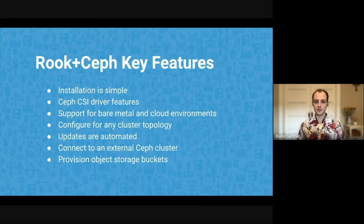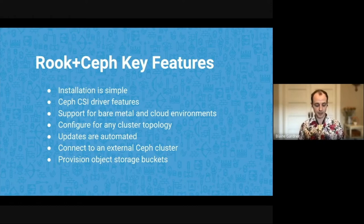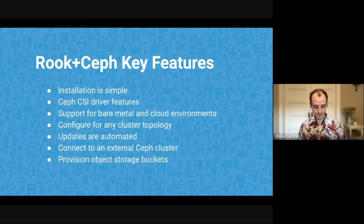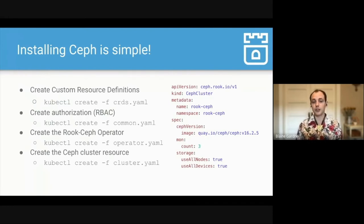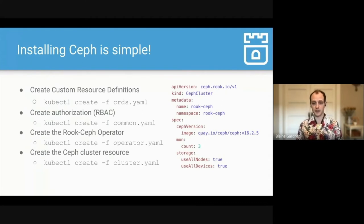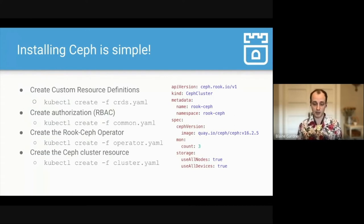Now let's talk about some of the key features in Rook and Ceph — features that are noteworthy and most commonly useful. Starting with installation, which we've tried to make as simple as possible. There are essentially four steps to setting up a Ceph cluster, and the first three could as easily be done on one line as on three different lines. Very rarely do these need any modification. Creation of the Ceph cluster resource in Rook is the only thing most people really need to customize, and at its simplest it could be 13 lines of YAML.